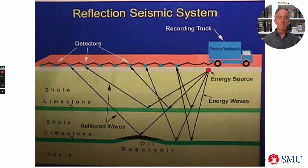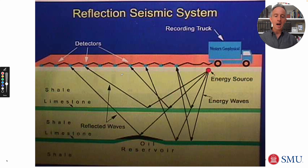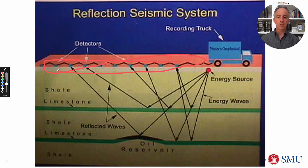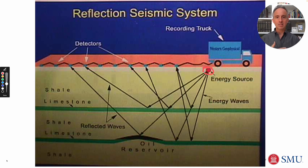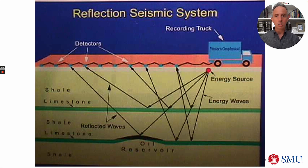Here's a basic picture of how seismic works. You have an energy source sending sound waves into the earth, and they reflect back differently depending on the density and structure of the subsurface. The information is captured by detectors spread out across the surface — for example, a recording truck that has both the energy source and detectors picking up the reflected seismic signals, which are used to infer how rock layers are structured beneath the earth.